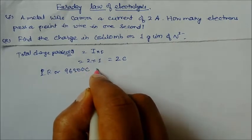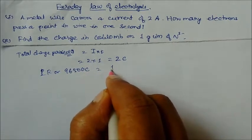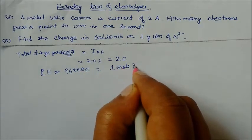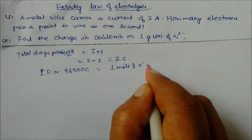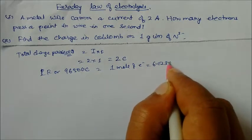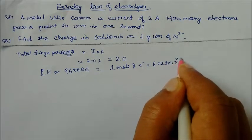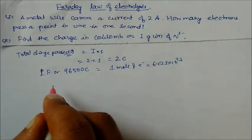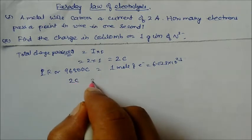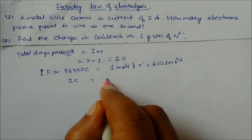Now we know that one Faraday is equal to 96500 coulomb, which carries one mole of electrons. One mole of electrons means 6.023 × 10²³ electrons. So for 2 coulomb, how much will it carry?